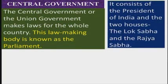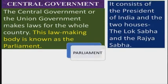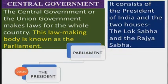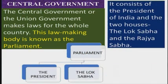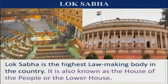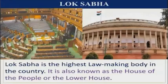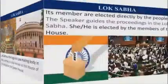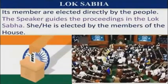The parliament consists of the president of India and the two houses — the Lok Sabha and the Rajya Sabha. Lok Sabha is the highest lawmaking body in the country. It is also known as the house of the people or the lower house. Its members are elected directly by the people, and the speaker guides the proceedings in the Lok Sabha.